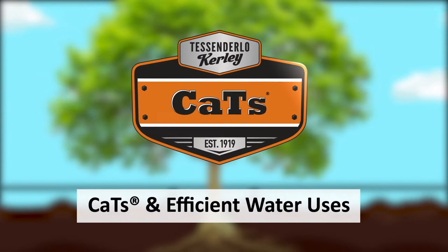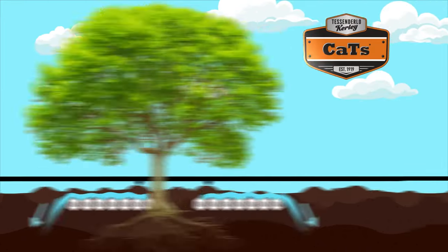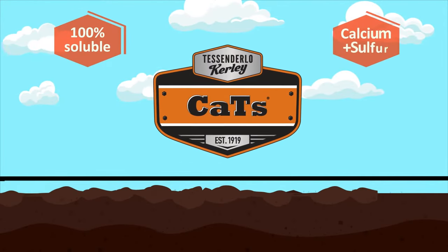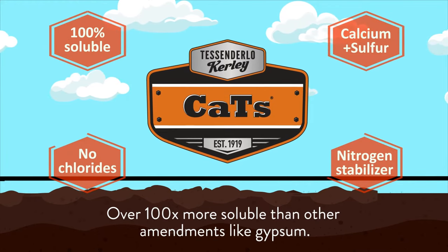In today's world of water restrictions and drought, it is essential to use water as efficiently as possible. CATS is a liquid soil amendment and fertilizer that works immediately to start improving soil structure and water efficiency.